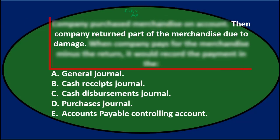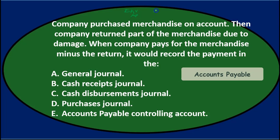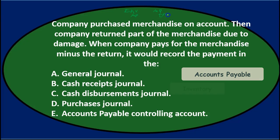Then the company returned part of the merchandise due to damage. Normally the journal entry for that would be a debit to accounts payable — because we no longer owe it since we returned it — and then a credit to inventory to make inventory go down.